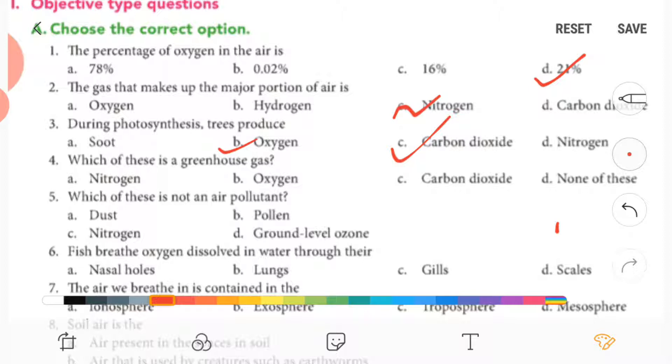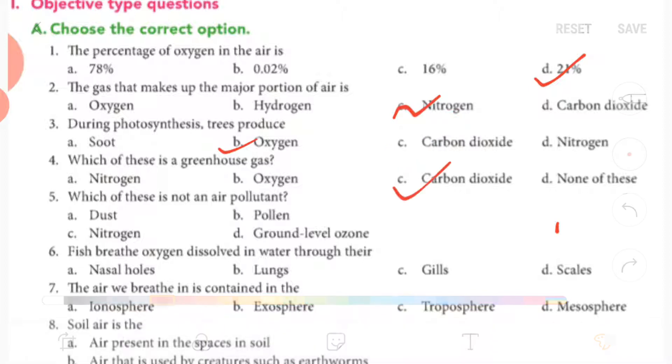Which of this is a greenhouse gas? It was carbon dioxide. Fifth one, which of this is not an air pollutant? So it is nitrogen.